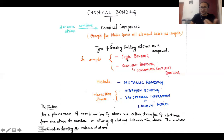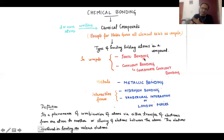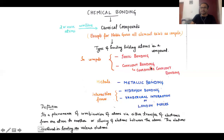If I ask what you mean by ionic bonding, you will quickly say it is basically a loss or gain of electrons — in other words, a complete transfer of electrons from one atom to another. When this type of electron transfer leads to the formation of a compound, those compounds are called ionic compounds, and the bonding involved is called ionic bonding.